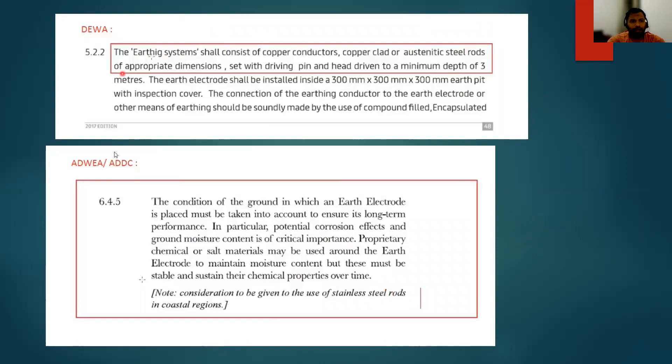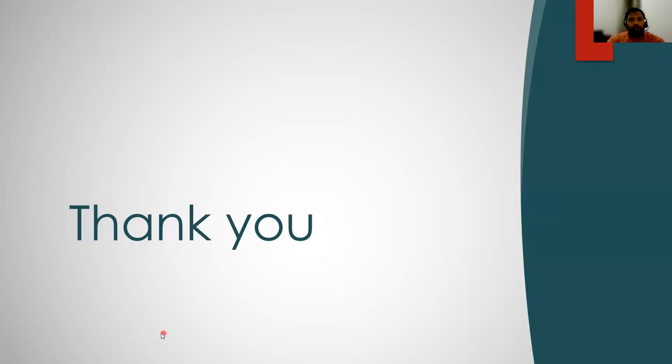According to the DEWA and ADDC standards, it says that if you are using the stainless steel rods, it is good. Earthing system shall consist of copper conductors, copper clad, austenitic steel rods. According to DEWA and ADDC as well as other standards, it will allow you to use stainless steel rods. Comparing all those parameters, if you are going for stainless steel, it will reduce your cost. Comparing to copper, stainless steel rods are very cheap. Overall, your system will be less costly.